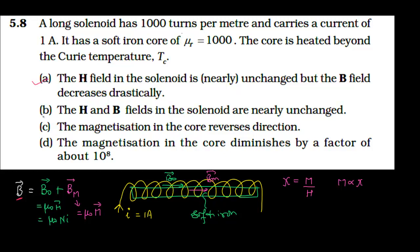Now Option B says: both H and B in the solenoid are nearly unchanged. But H is unchanged while B has changed, so Option B is wrong.